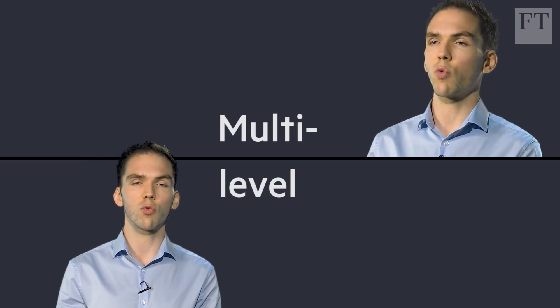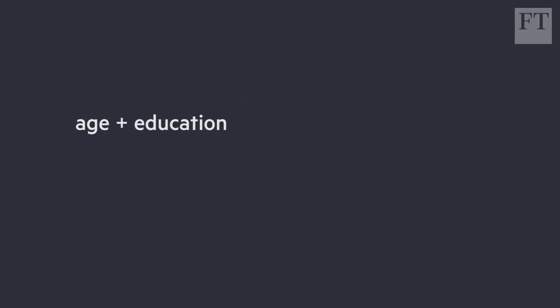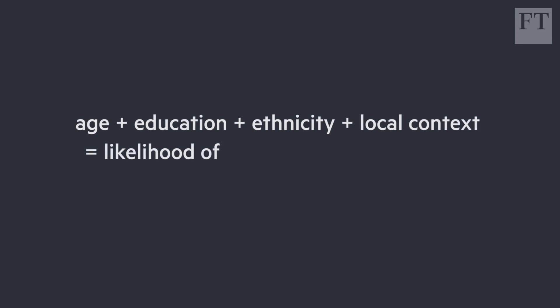You then run a regression on that data. That's a statistical technique that measures the probability of someone with those combinations of personal and local characteristics: A, voting at all, and B, voting for a particular party.